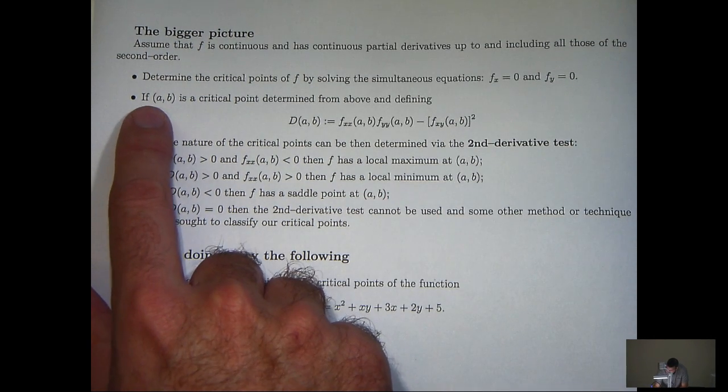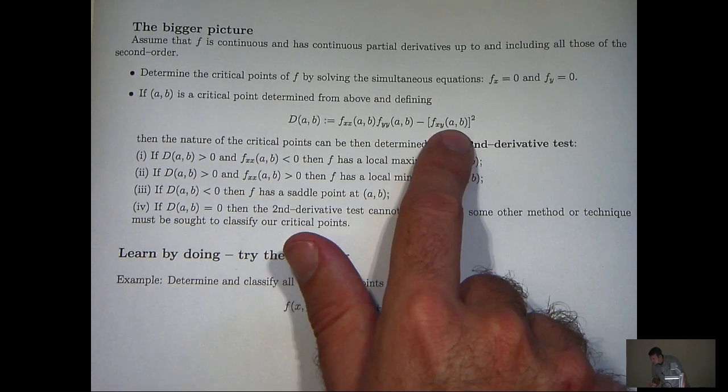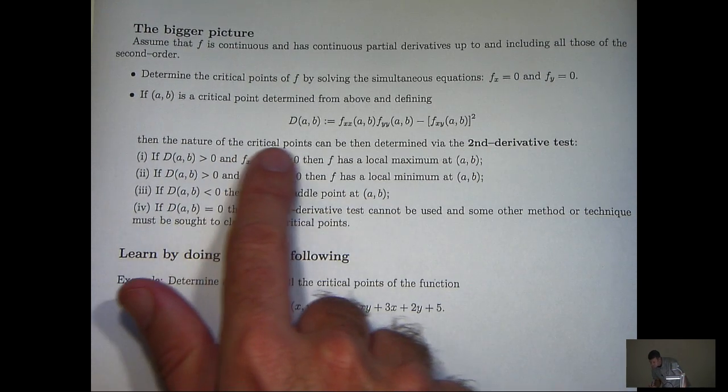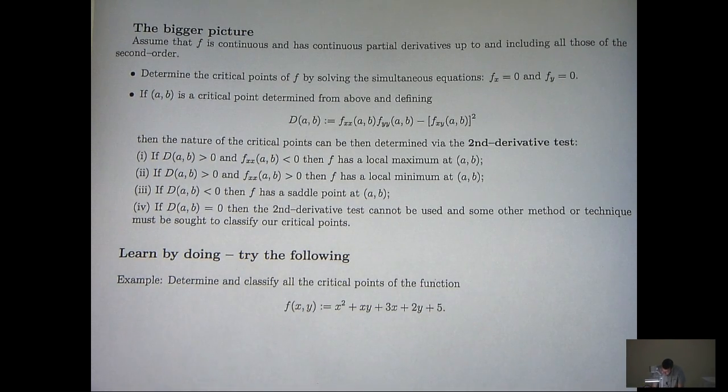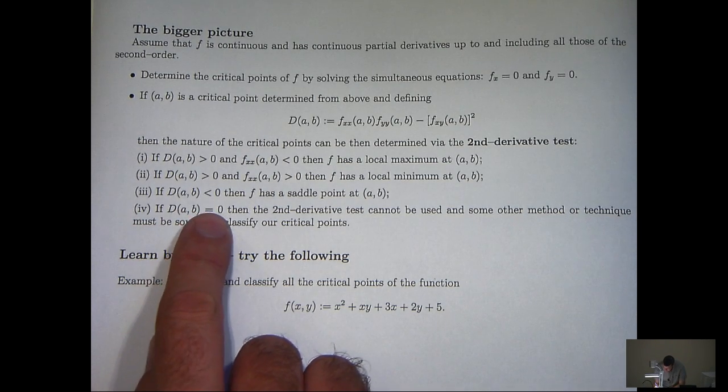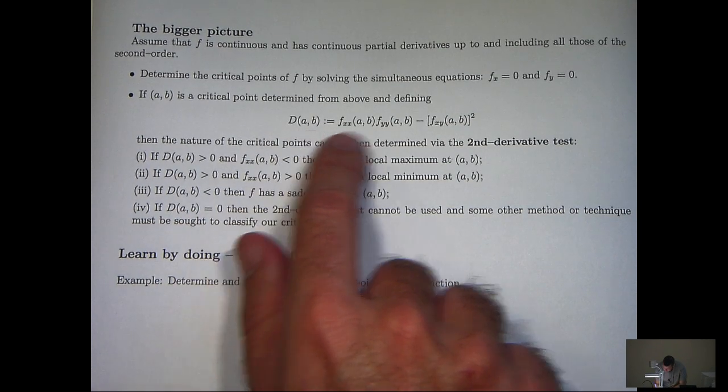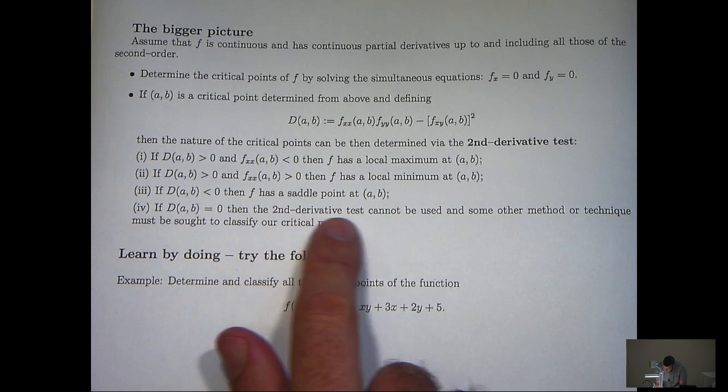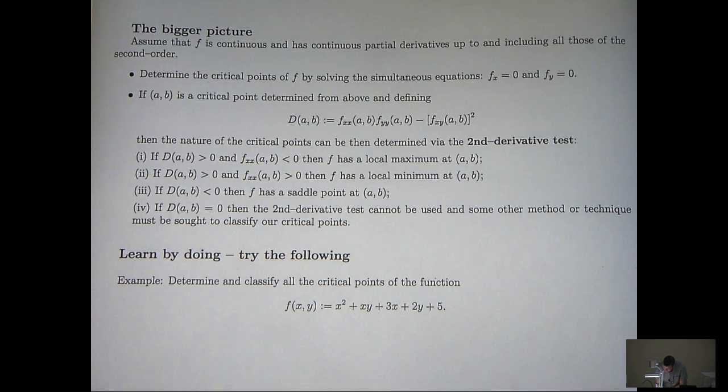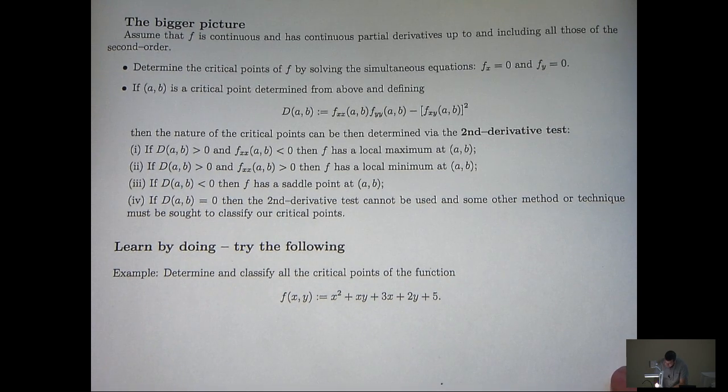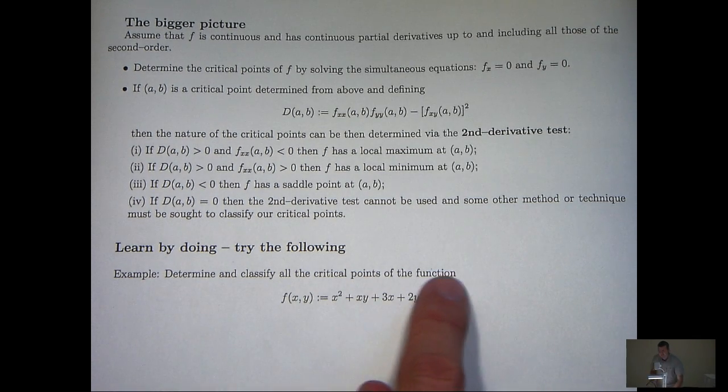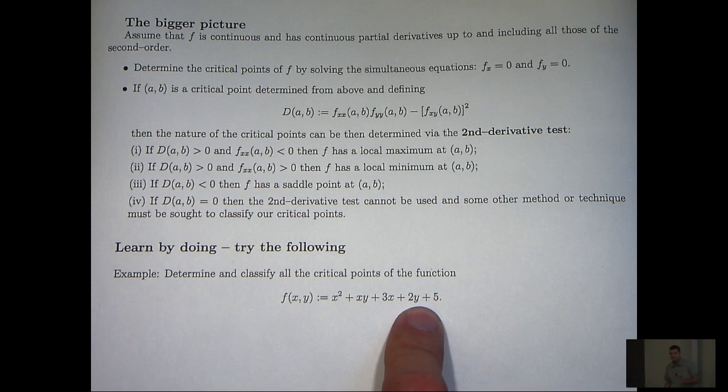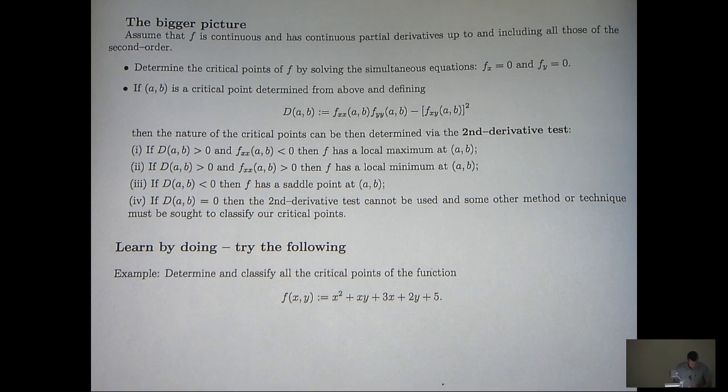So determine the critical points of f by solving these simultaneous equations involving f sub x and f sub y. Now once we've located our critical point, if we define d in the following way, then the nature of the critical point or points can be determined by the second derivative test. Now it's important to realize that if this d is 0, so you plug in a and b and you get 0 here, then the second derivative test cannot be used and some other method or technique is required. Now it's important that you learn maths by doing maths. So I've included an example here. Determine and classify all the critical points of this function here. Now it's very similar to the example that I've just shown you.